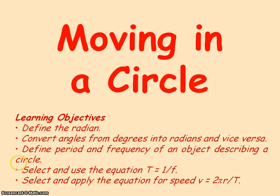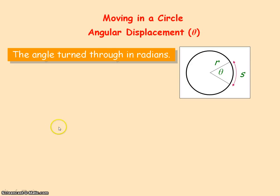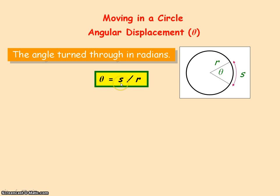We are going to be looking at an object moving in a circle. The angular displacement of this object would be the angle it turns through, and this is measured in radians. Mathematically, this angular displacement theta is the arc angle, and arc angle equals the arc length, which in this case is s, the distance travelled, divided by the radius of the circle.